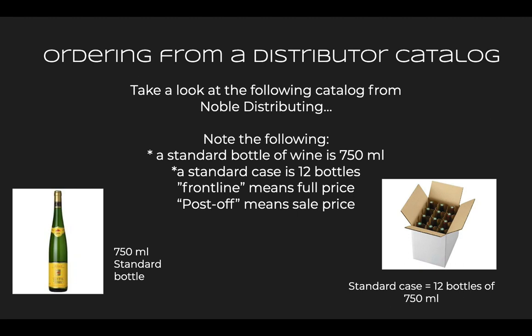Some industry jargon to note when looking through a distributor catalog: you'll see columns referencing frontline and post-off. Frontline price just means full price — that's the standard price. Post-off is industry jargon for sale price. If nothing is listed in the post-off column, you default to the frontline price, meaning it's not on sale. To recap: standard bottle is 750 milliliters, standard case is 12 bottles, frontline means full price, and post-off means it's on sale.